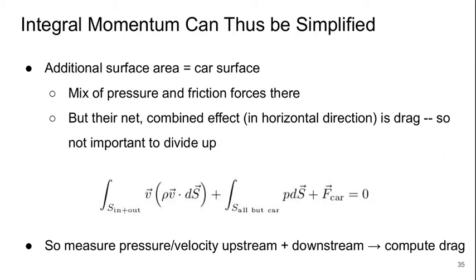That means we can simplify our integral momentum equation. The additional surface area we haven't covered is the car surface. There's a mix of pressure and friction forces there, but their net combined effect in the horizontal direction is drag, so it's not important to divide it up. Over all the in and out flow surfaces, we need to account for momentum flux and integrate the pressure over all the surfaces but the car. We don't need to know the pressure on the bottom surface because that contributes purely in the vertical direction. So basically we need to measure the pressure and velocity upstream and downstream, and from that we can compute the drag.